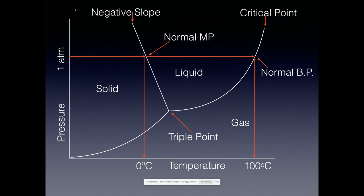The negative slope of the solid-liquid boundary has a very important meaning: you can increase pressure at constant temperature, cross the solid-liquid boundary, and melt ice. So you can squeeze an ice cube and cause it to melt. When you make a snowball, you squeeze and compact it — that melts the surface water, giving it a nice crust so it doesn't fly apart when thrown. This negative slope also means, very importantly, that water is less dense as a solid than as a liquid — ice floats. This is why you can't put a bottle of Coke in the freezer: when it freezes, the volume expands and the glass breaks.